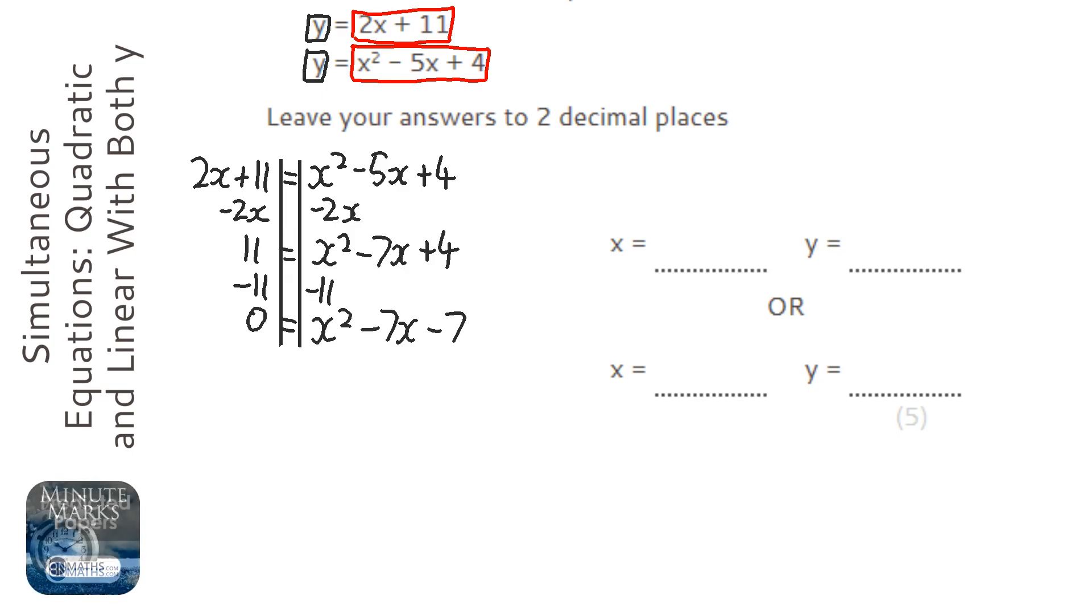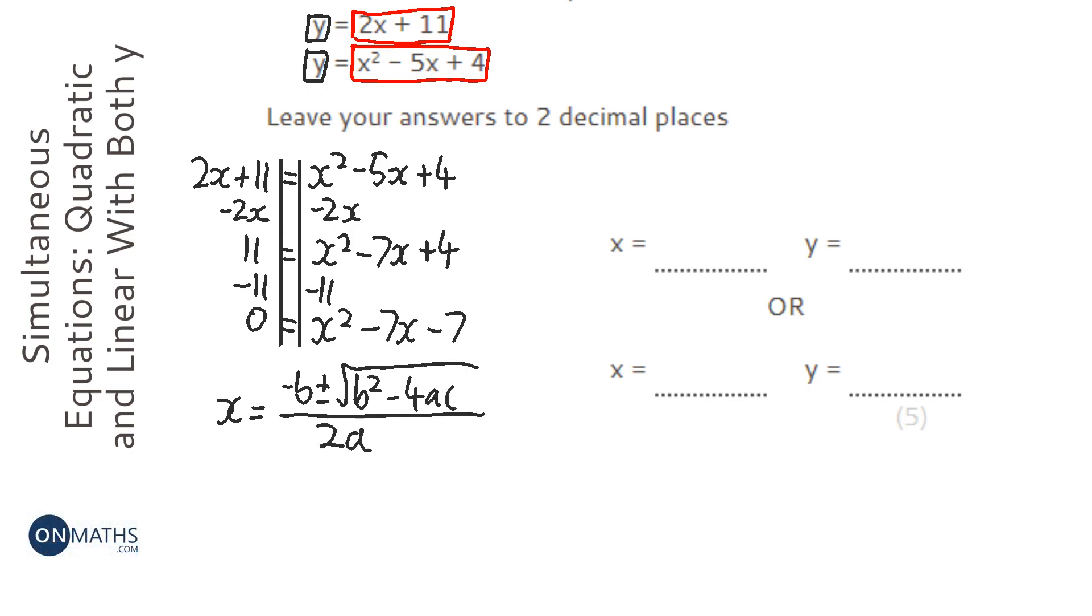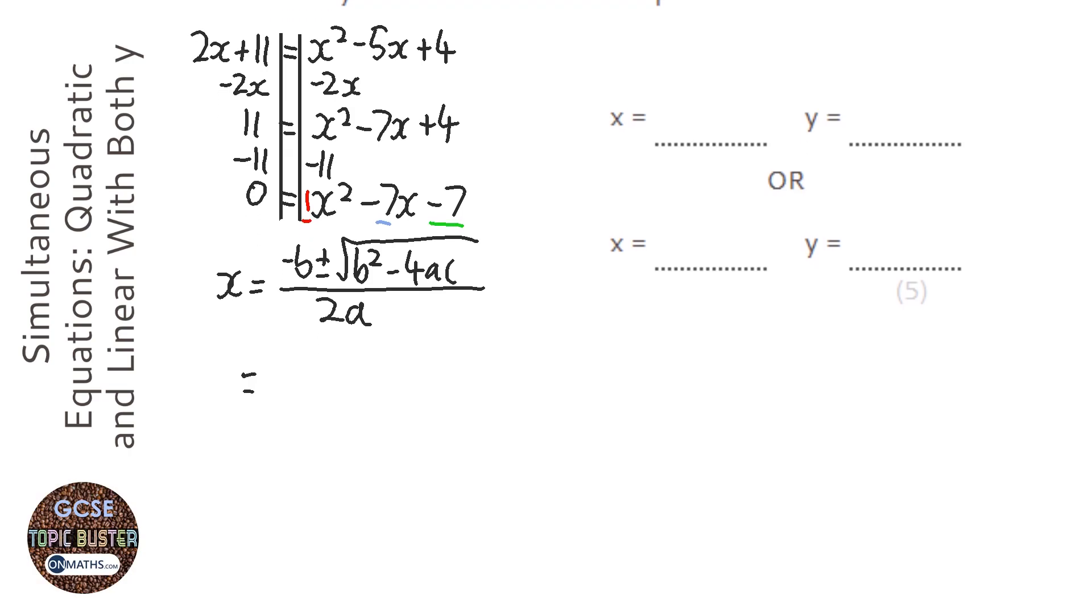So we need to remember what the quadratic formula is. So minus b plus minus square root of b squared minus 4ac over 2a. We've got a is 1, b is minus 7, and c is also minus 7. OK, it's going to take a while.